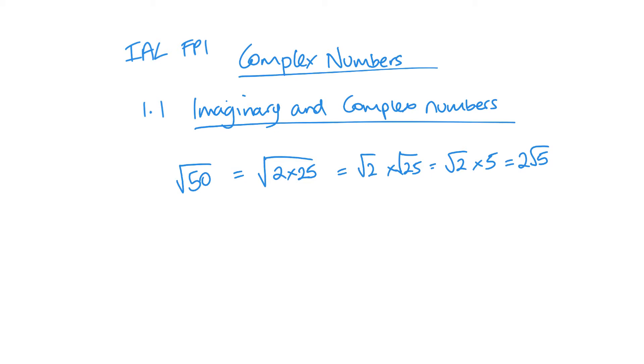So what are they? Essentially an imaginary number i is the square root of negative 1. Because it's a negative number, we can't think of two numbers that will ever multiply to give it a negative number.